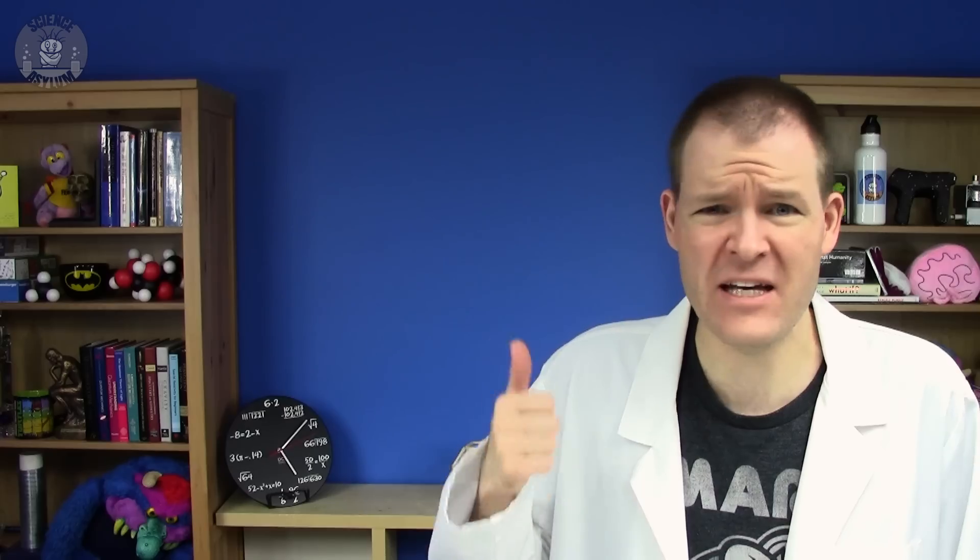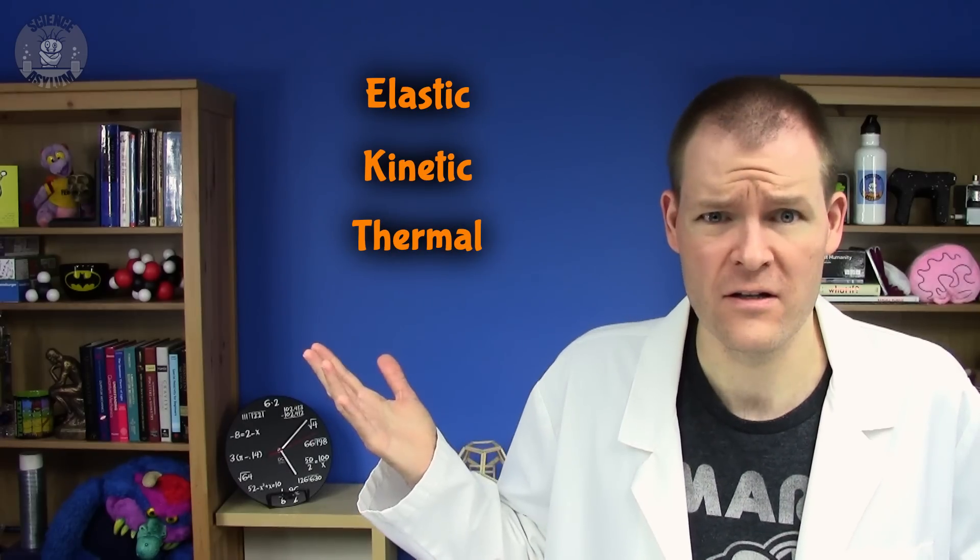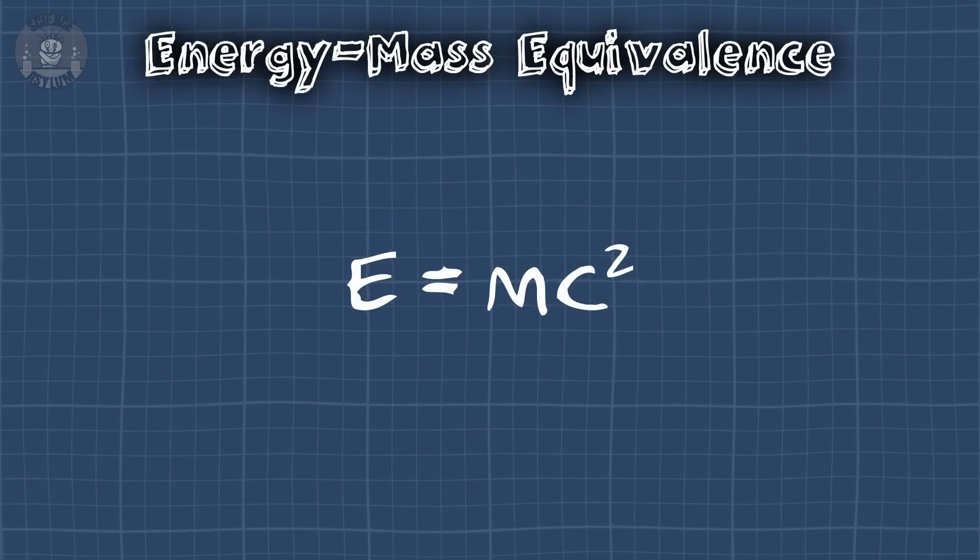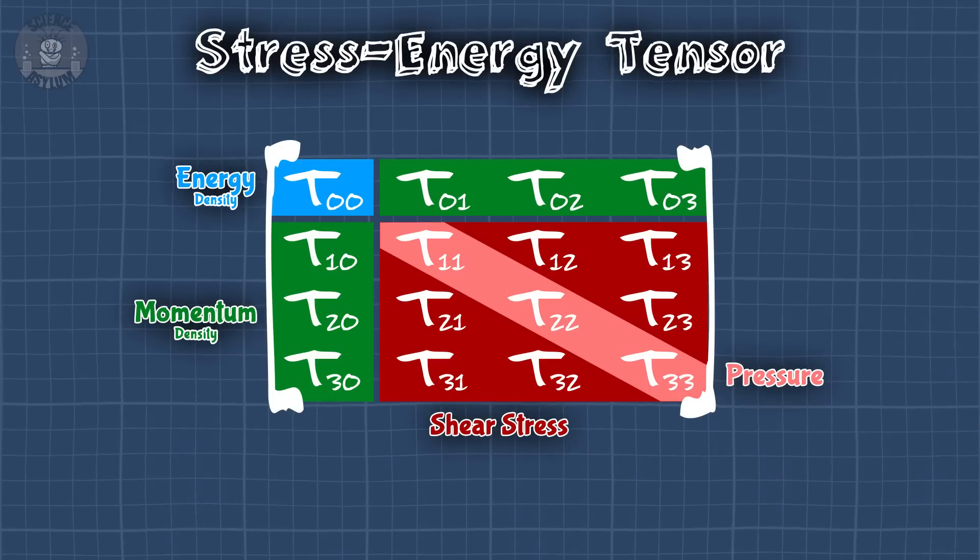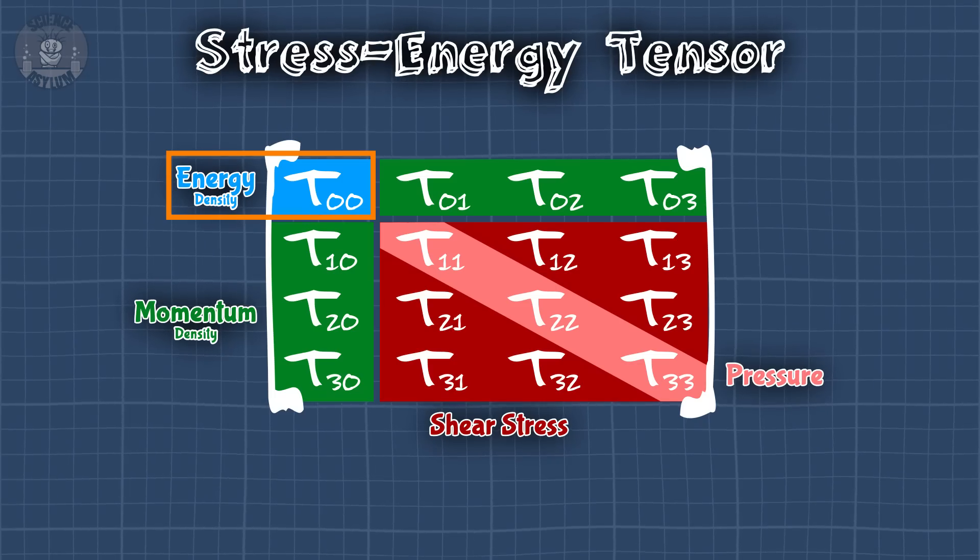That energy could be elastic, kinetic, thermal, whatever. If the object has more energy, it's harder to accelerate, it's affected more by gravity, and it generates more of its own gravity, no matter what type of energy that is.